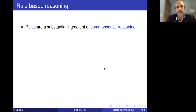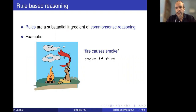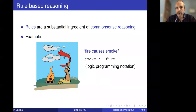What are rules? Rules are an important part of common sense reasoning, and they are sometimes confused with the idea of logic, but they are not exactly the same as classical logic implications. For example, when you say that fire causes smoke — or written as 'smoke if fire' — you are providing a rule that says something produces an effect.